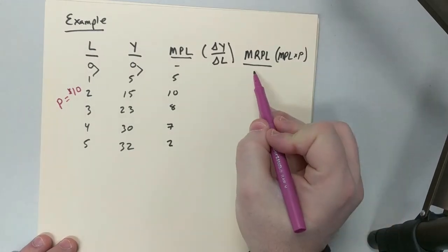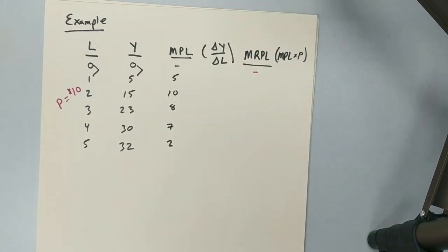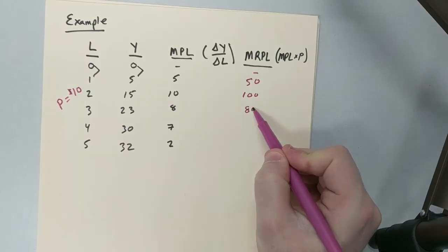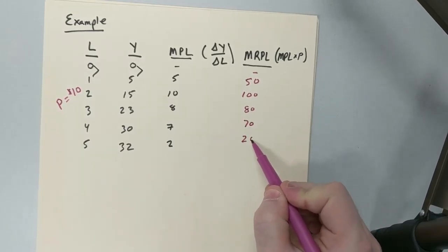If that means the price is $10, again, you can't have anything for zero. And I guess you could say it's zero, but it's unknown. Only Chuck Norris can divide by zero, I believe is what someone once told me. And then all I'm taking is this MPL, multiplying it by the price. So it would be 50, 100, 80, 70, and 20. Very simple math.